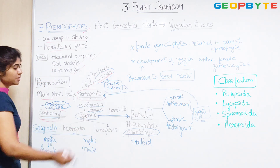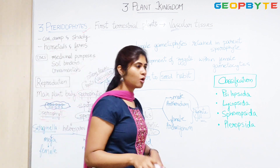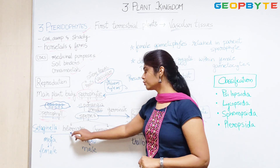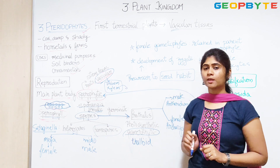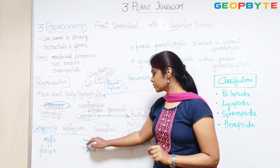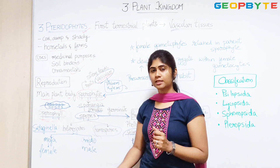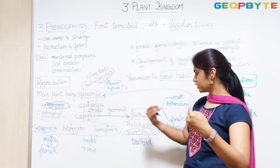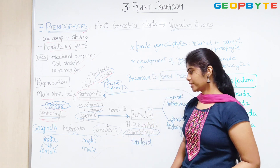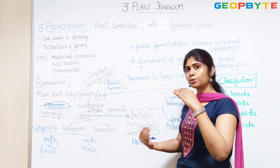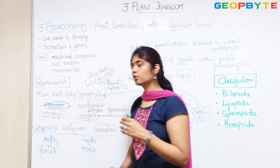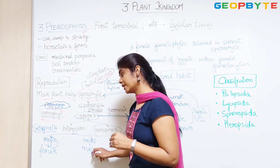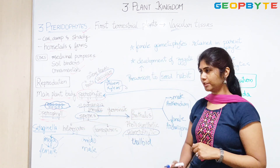The spores produced can be of a similar kind or a dissimilar kind. When they are of a similar kind they are called homospores, and when they are of a dissimilar kind they are called heterospores. Dissimilar means one is of a micro size — a microspore — and the other is of a bigger size — a megaspore. The microspore gives rise to a male gametophyte, whereas the megaspore gives rise to a female gametophyte, both being produced from the heterospores.